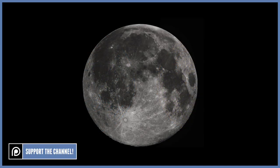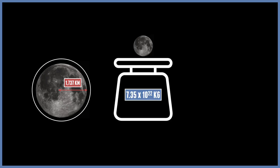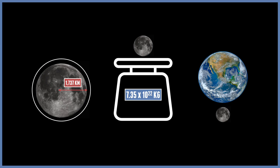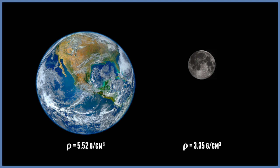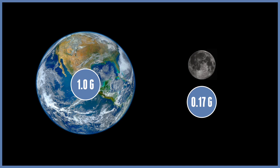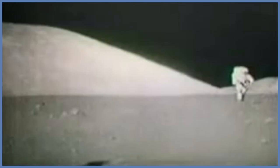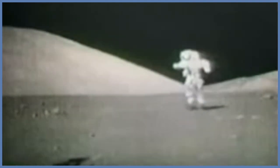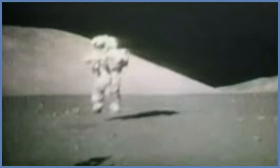The Moon is the only astronomical body where human beings have been able to test out gravity in person. It's a very small object at around 1,700 kilometres in radius, with a mass of 7.35 times 10 to the 22 kilograms — only about the size of the United States. Because of its size, mass, and low density, gravity is only 1.62 metres per second squared — 0.17g. This explains why the Apollo astronauts were jumping around like they were on a trampoline, and could experiment on the Moon's surface in ways impossible on Earth.